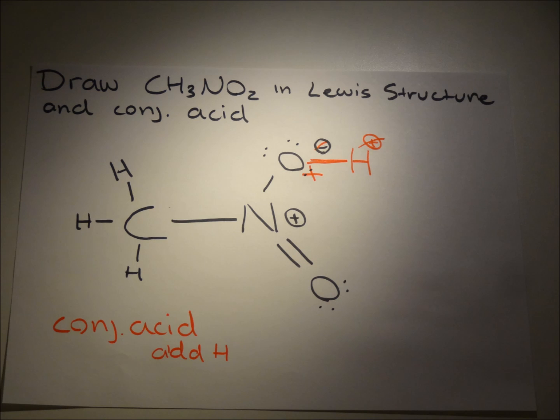To find the conjugate acid, all you have to do is add one hydrogen. The only place that would accept another hydrogen would be the negatively charged oxygen on the top, so you would eliminate one lone pair of electrons and provide the oxygen with the hydrogen.